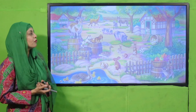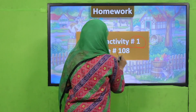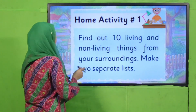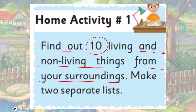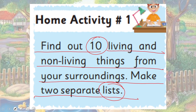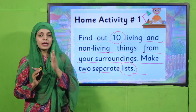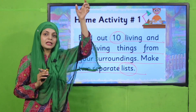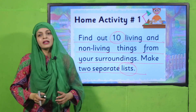Now let's quickly move forward towards the homework. For homework, you will do home activity number one given on page number 108. Find out 10 living and 10 non-living things from your surroundings and make two separate lists. Aapko apne ghar se 10 non-living aur 10 living cheezein dhundh kar unke names likhne hain — alag alag: ek pe non-living tamam cheezein, aur doosri taraf living cheezein likho.